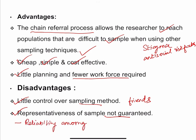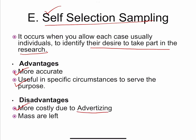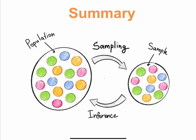The last type of non-probability sampling is self-selection sampling, which occurs when you allow each unit to identify their desire to take part in the research. Results will be more accurate and useful in specific circumstances. Disadvantages: more costly as it requires more advertisement, the majority of the population will be left out, and it can cause selection bias — specifically volunteer bias.